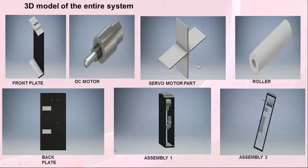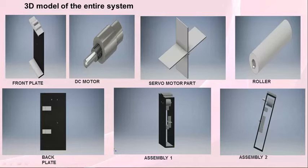This is the roller part which we are going to use in order to pull the note inside. You can see that a hole is made so that the roller can be properly fitted inside into a DC motor.